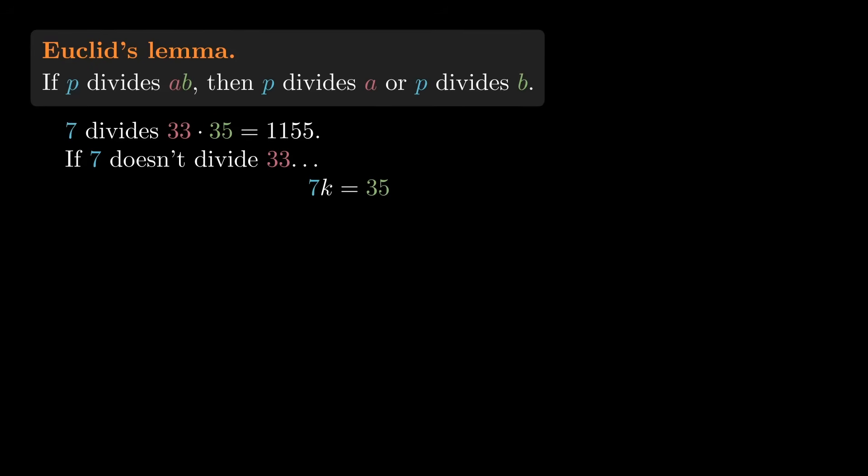That's equivalent to 35 being a multiple of 7. So a natural way of doing this would be to construct a number k such that 7k equals 35. With particular numbers, this is easy. k is 5.